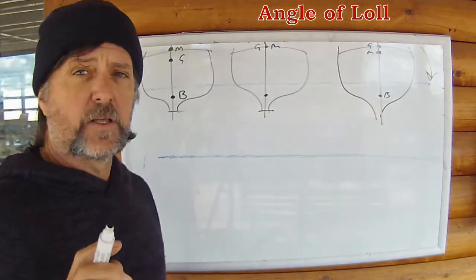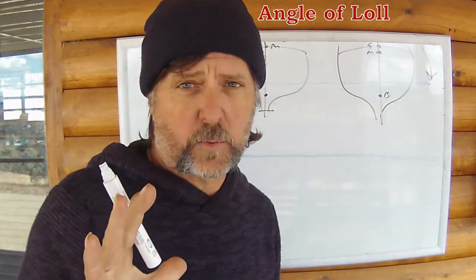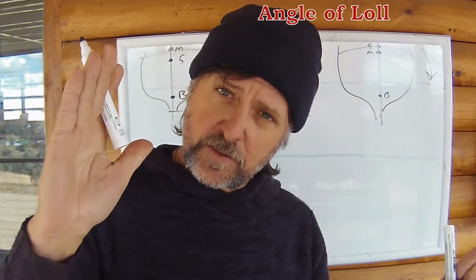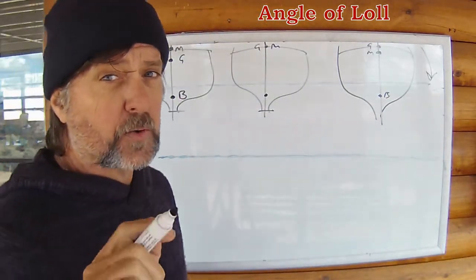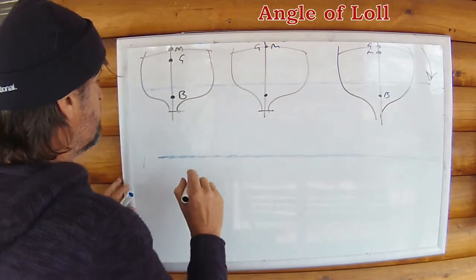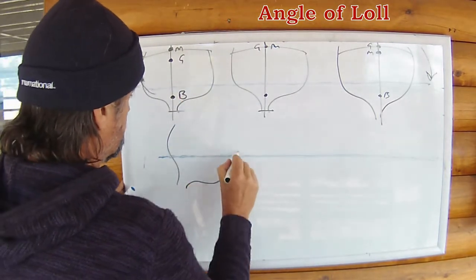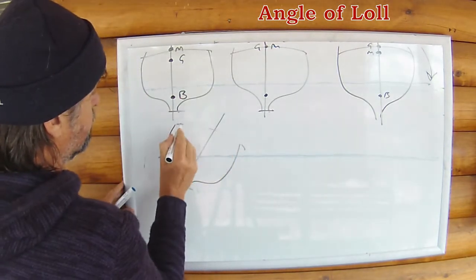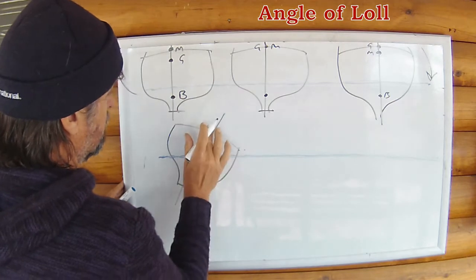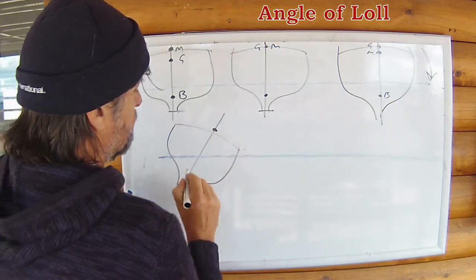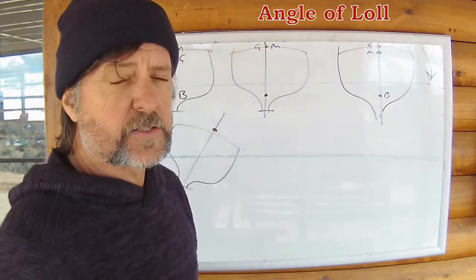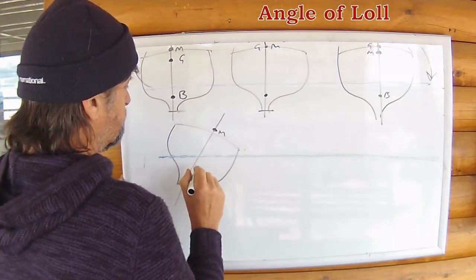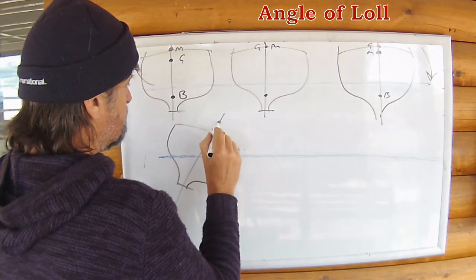But if your vessel is of a design whereby as the ship starts to incline, the beam at the waterline can increase as the vessel starts going over, such as in a box-shaped vessel that is loaded low, then you might achieve an angle of loll, which may just save you in the end, like the video we just saw.